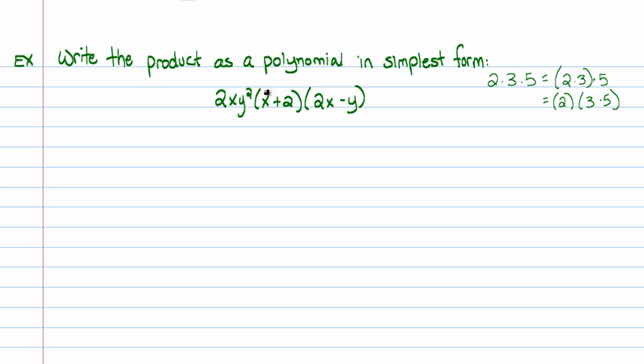I'm going to signify the multiplication of the binomials here just by distribution. So that x will distribute to the 2x and it will distribute to the negative y. And the 2 will distribute to the 2x and also to the negative y. So this will be equivalent to 2xy² times the product of these two binomials, which will be 2x², minus xy, plus 4x, minus 2y.